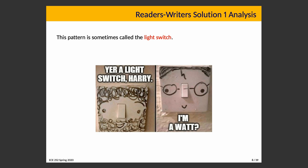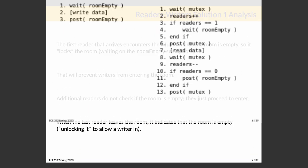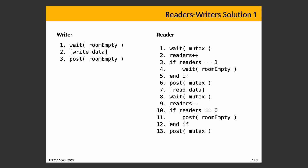Why a light switch? The behavior is kind of like what happens when you go into a room. If you're the first one in, you turn on the lights; when you're the last to leave, you turn them off. The first reader, when it calls wait on room_empty at statement four, is turning on the lights. The last reader leaving posts on room_empty — turning off the light. The writer waits for the light to be turned off, and when it enters, it turns it on, then turns it off again when it leaves.